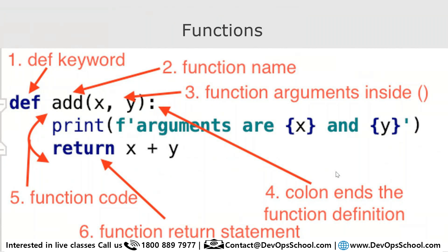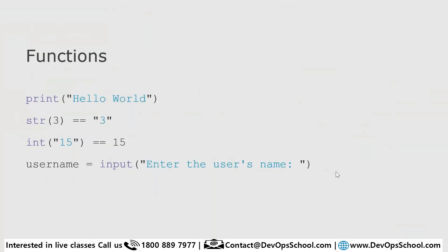Here you can see f-string formatting — the f-arguments are `x` and `y`, and you are calculating and returning `x + y`, meaning you add the two values passed in and return the result. You can try this out.